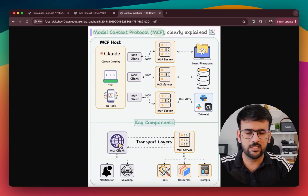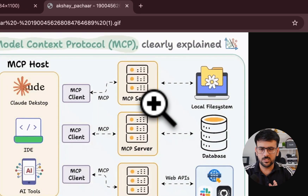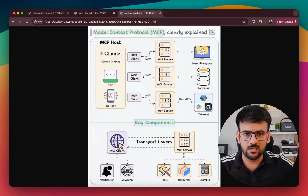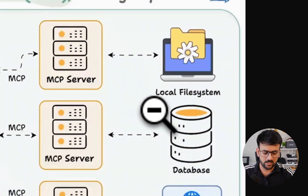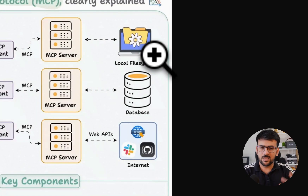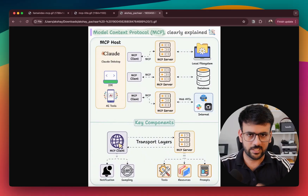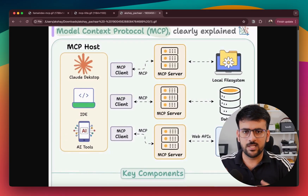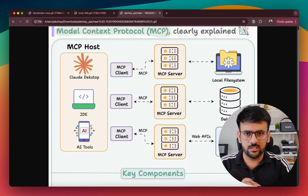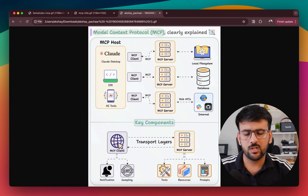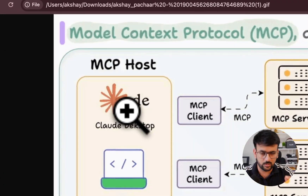There are two major components in an MCP setup. One is an MCP server, which basically wraps up external APIs, databases, or any API present on the internet — it can also be your local file system. It wraps them as MCP tools and makes them available to the client. An MCP client is used by our AI application and by the agents and LLMs we're building to communicate with the MCP server.